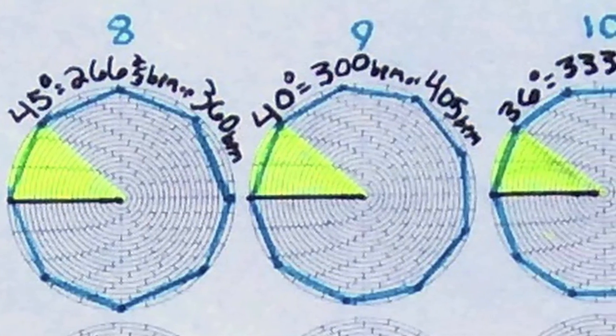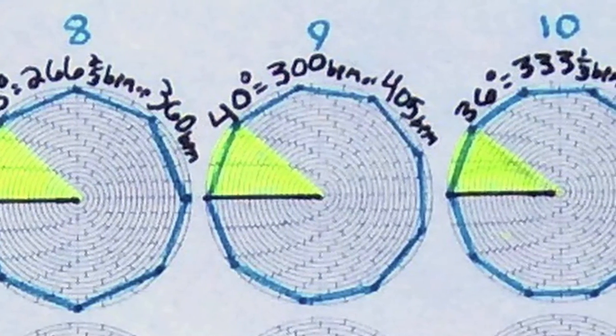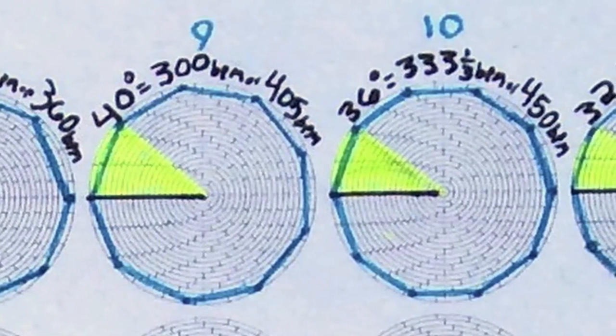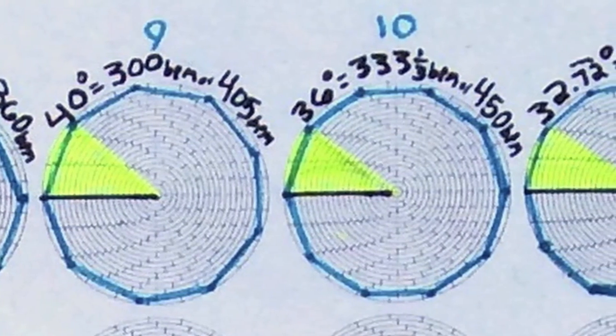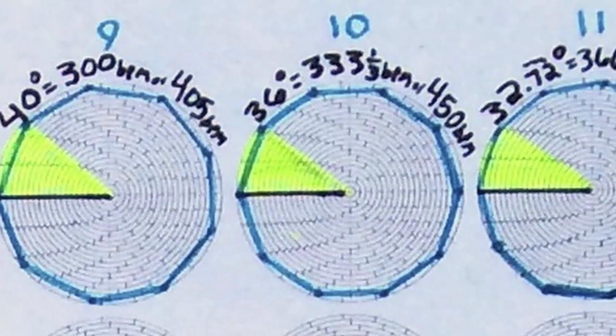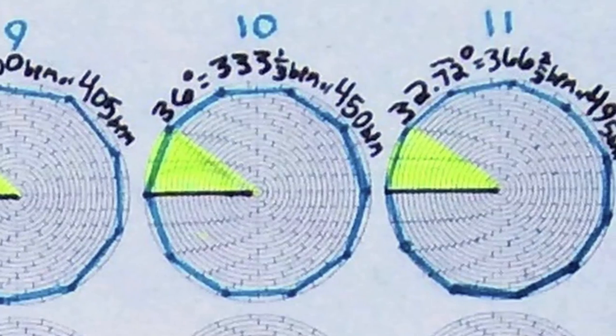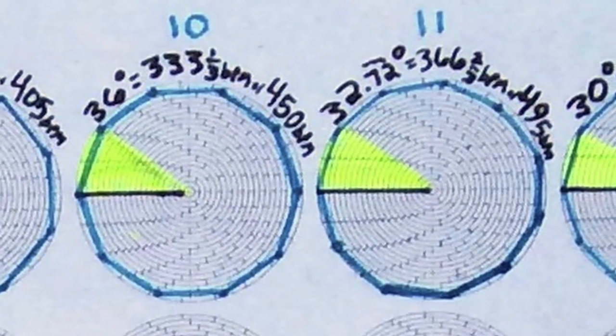equals 266.66 BPM at 33.3. 9. Nonagon equals 405 BPM at 45, equals 300 BPM at 33.3. 10. Decagon equals 450 BPM at 45, equals 333.3 BPM at 33.3.